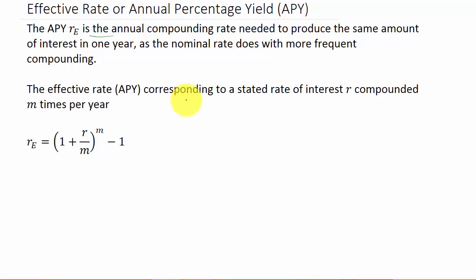The effective rate corresponding to a stated rate of interest R compounded M times per year is R sub E equals 1 plus R over M raised to the M minus 1. Where, it tells you right here, your rate of interest is R and M is how many times it's compounded in a year. In other words, if it's compounded semi-annually, M would be 2.